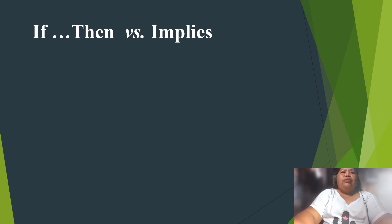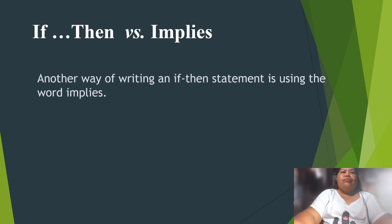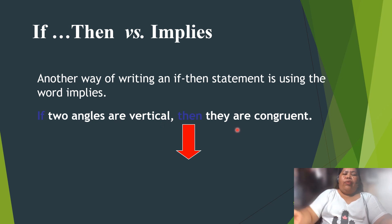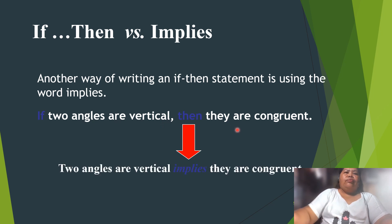Another way of writing an if-then statement is using the word 'implies.' For example: 'If two angles are vertical, then they are congruent' becomes 'Two angles are vertical implies they are congruent.'